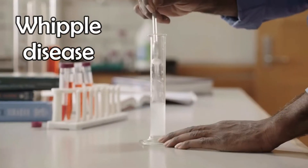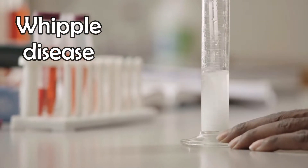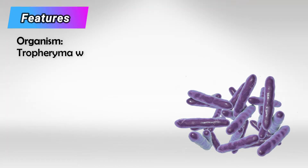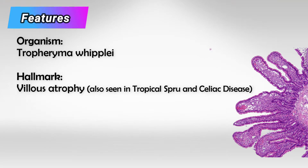Today we'll talk about Whipple disease. It's an infection in the intestine caused by Tropheryma whipplei, a gram-positive intracellular bacteria. This bacteria lives in the deep layer of the small intestine and very quickly causes villous atrophy, just like tropical sprue and celiac disease.